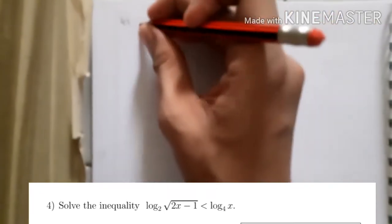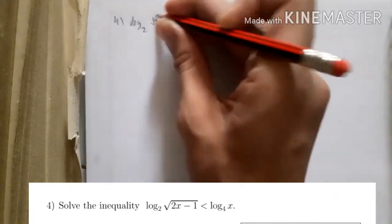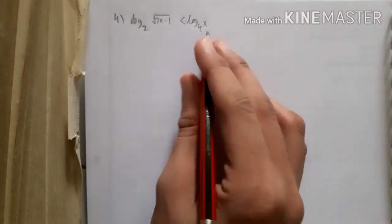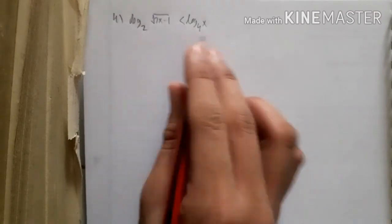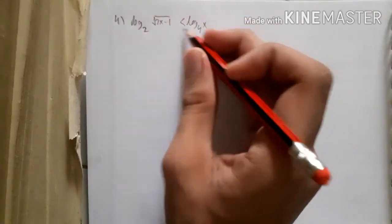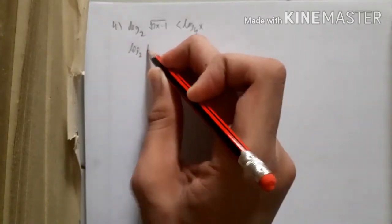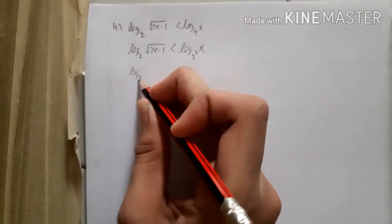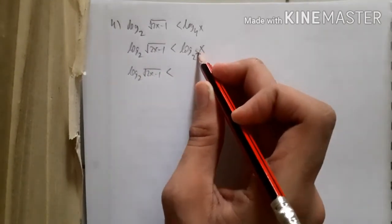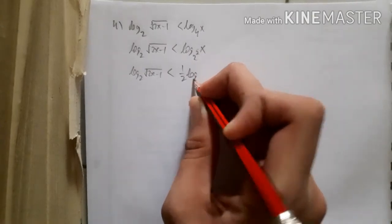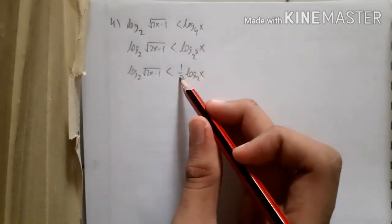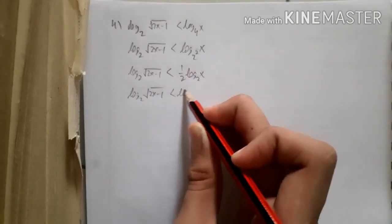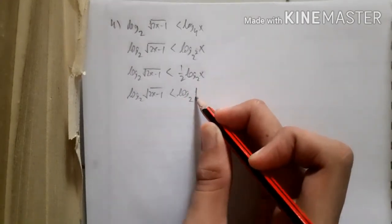For problem 4, we solve the logarithmic inequality: log₂(√(2x − 1)) < log₄(x). We need equal bases. Since 4 = 2², using logarithm properties, log₄(x) = (1/2)log₂(x) = log₂(√x). Now both sides have base 2, allowing us to compare the arguments directly.